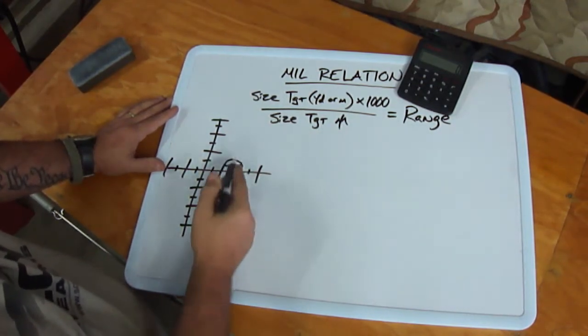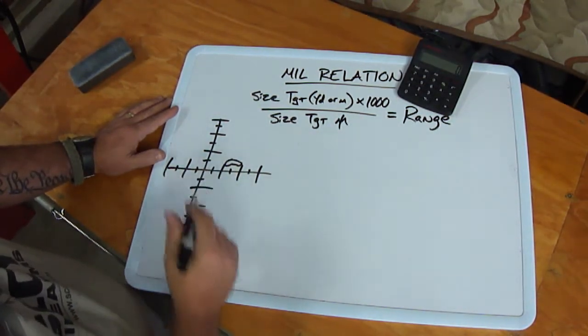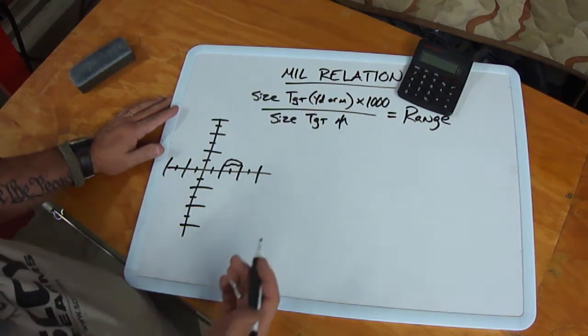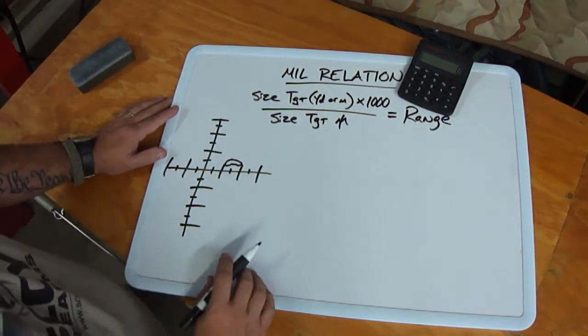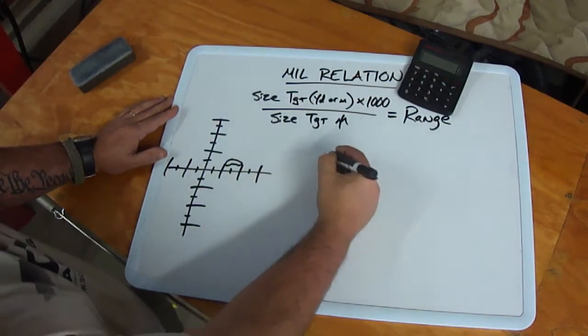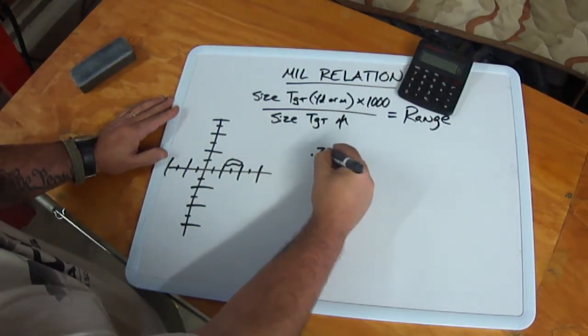So we'll draw our, I don't know, here's a big jelly bean. We'll say we know that huge jelly bean is 27 inches wide. 27 inches is 3 quarters of a yard, so that's .75.